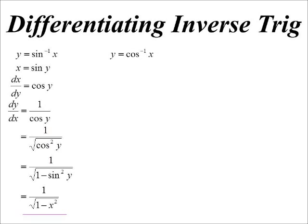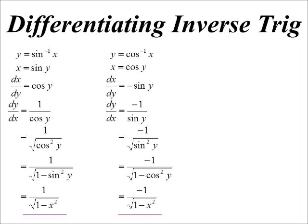Inverse cos, we can do a similar thing. And so we get cosine of y we're going to differentiate. Cosine, of course, goes to minus sine. So dy/dx will be 1 over, or minus 1 over sine y. And then a similar sort of transformation. We can turn that into in terms of x. And we also get a very similar thing.